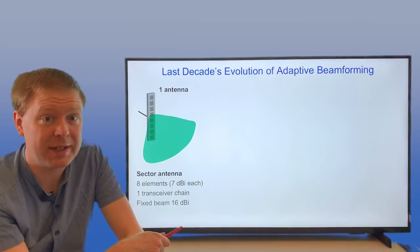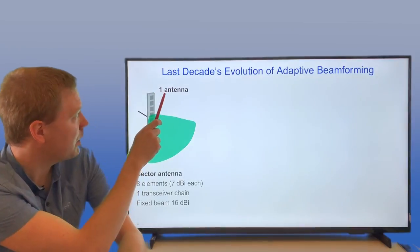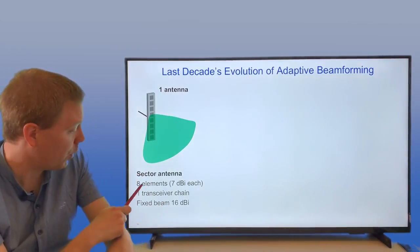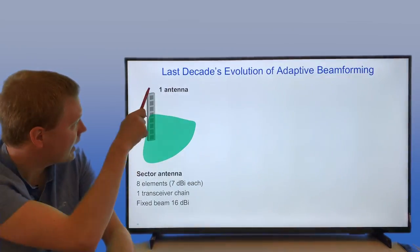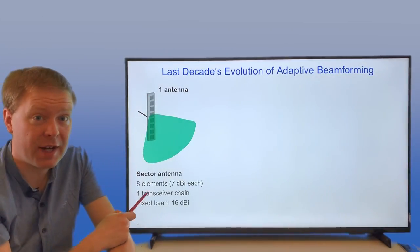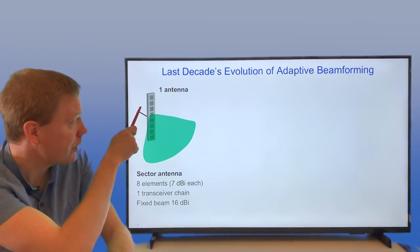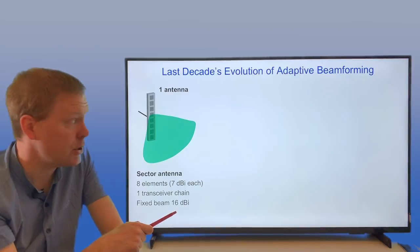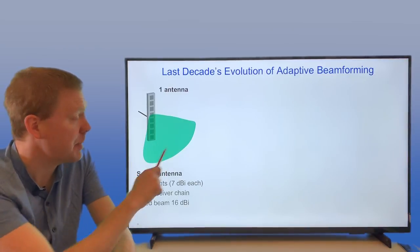We've been going from the case when we have one antenna, a so-called sector antenna with, say, eight radiating elements, but they're all putting together to one transceiver chain that is sending the same signals, forming a beam towards the location down on the ground where the users are. Maybe you have a certain beam width here, so you're serving a 120 degree sector and people on the ground.